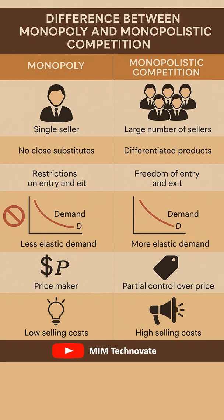In a monopoly, there are no close substitutes for the product available in the market. Conversely, the monopolistic market features closely related products that are differentiated.